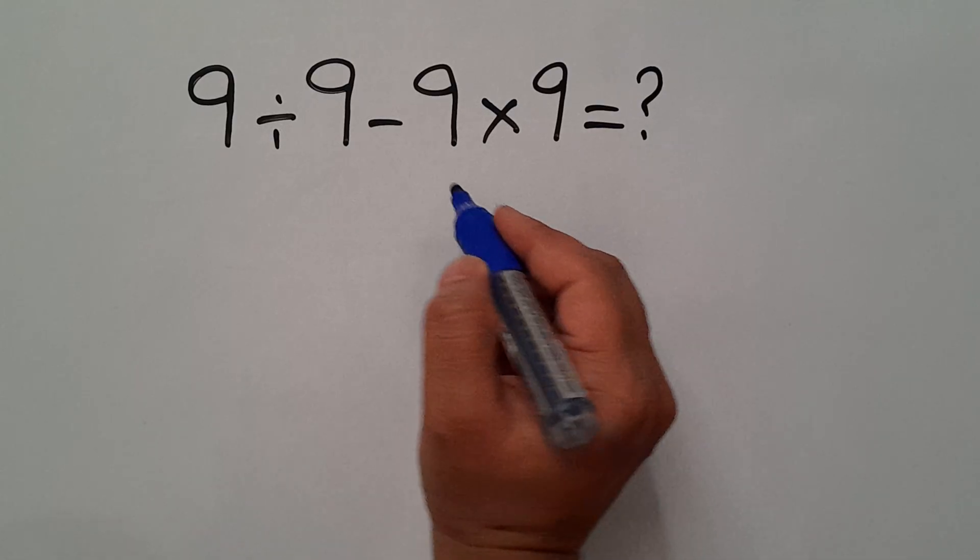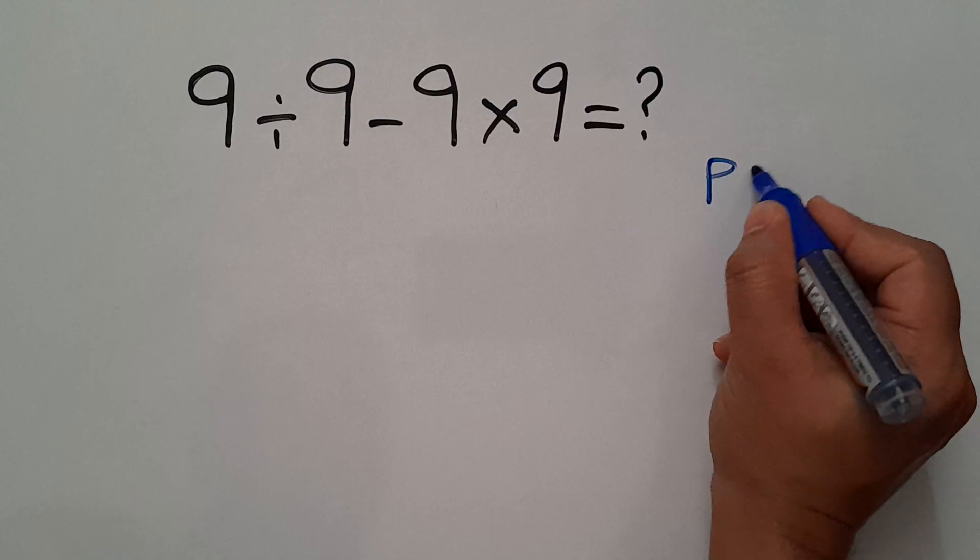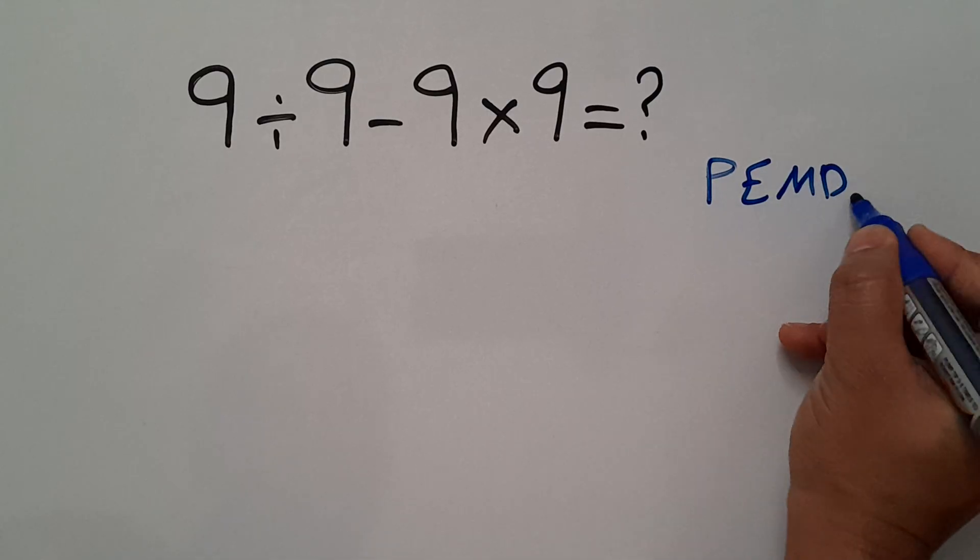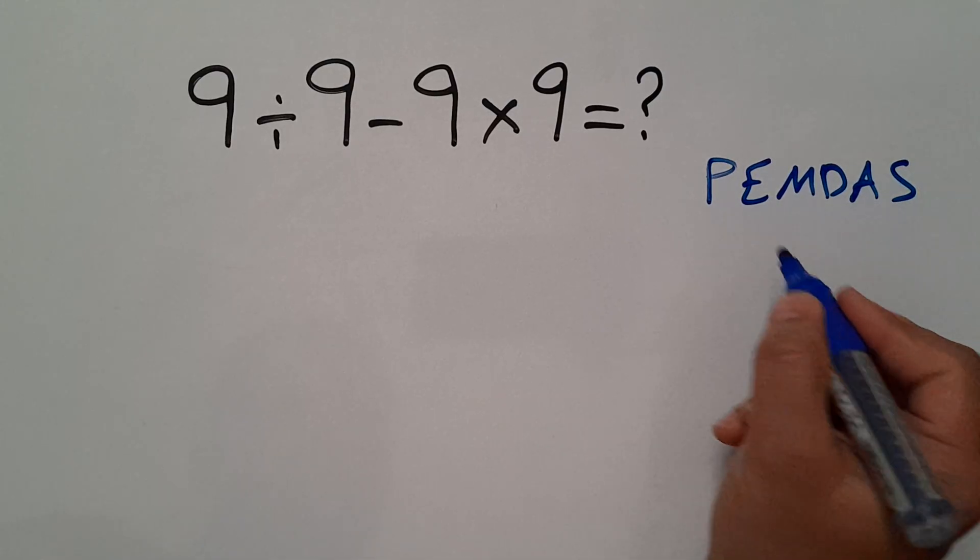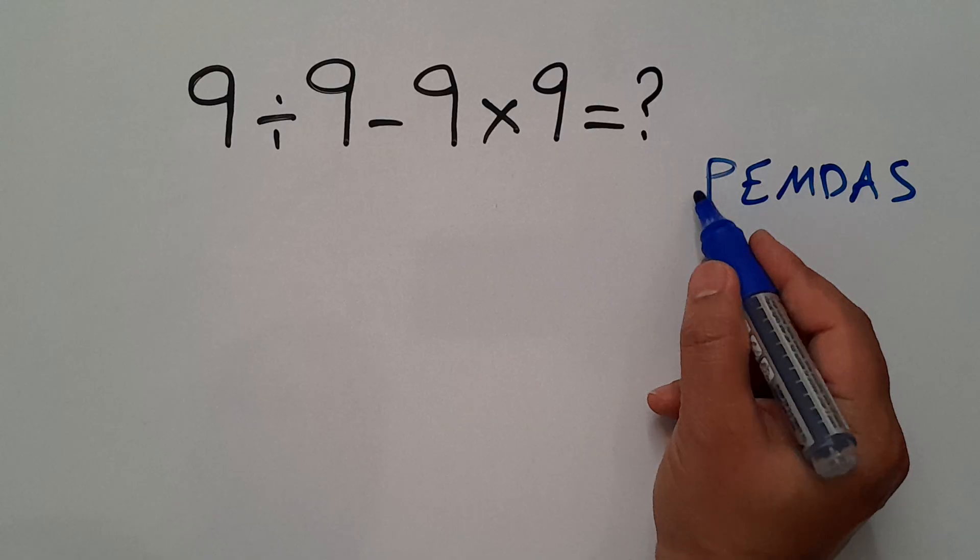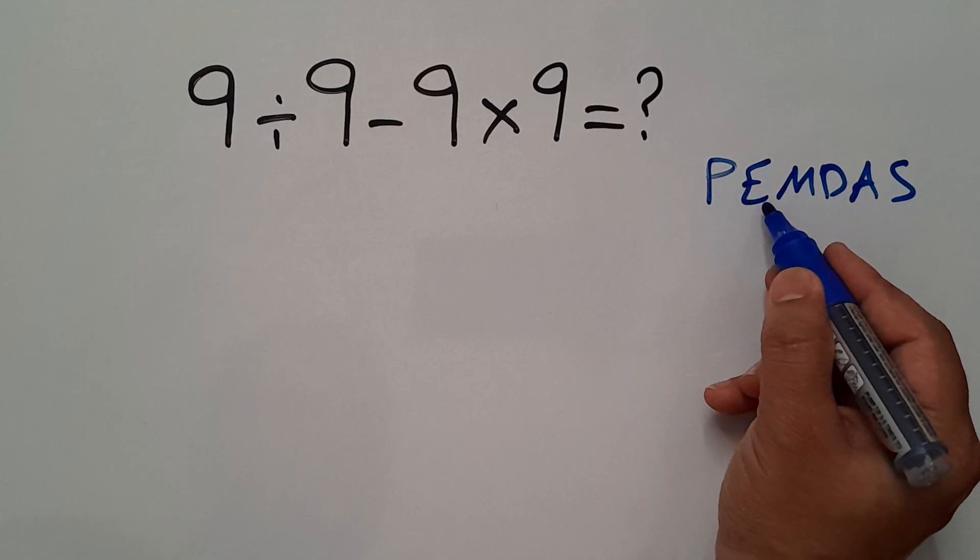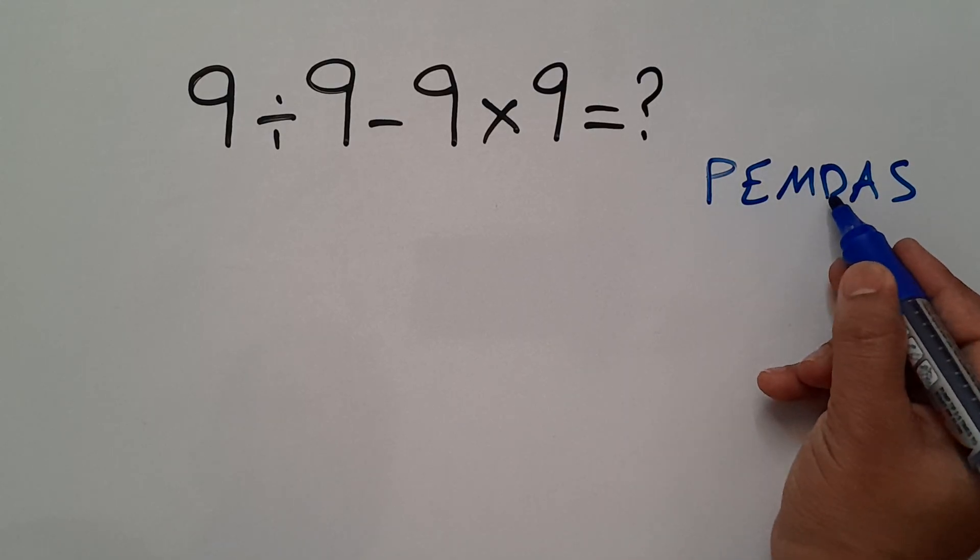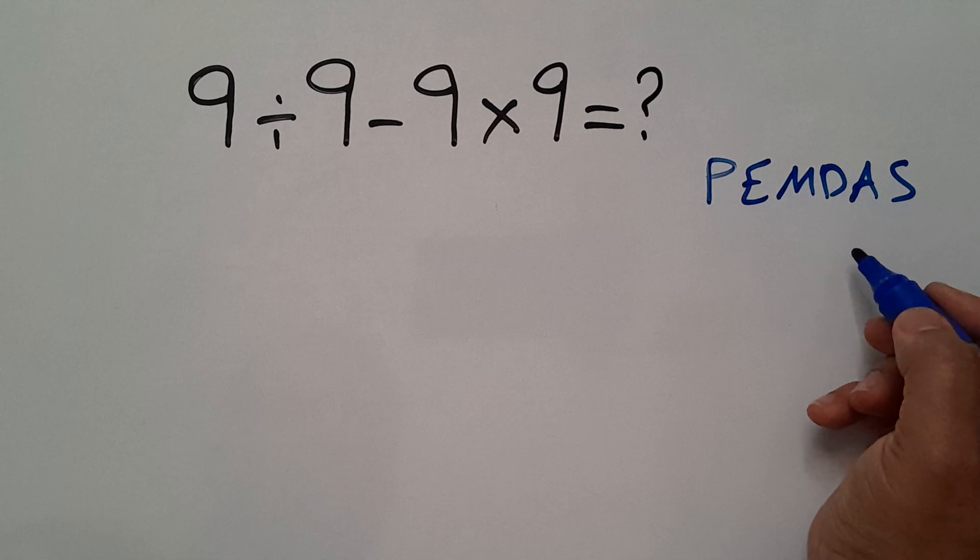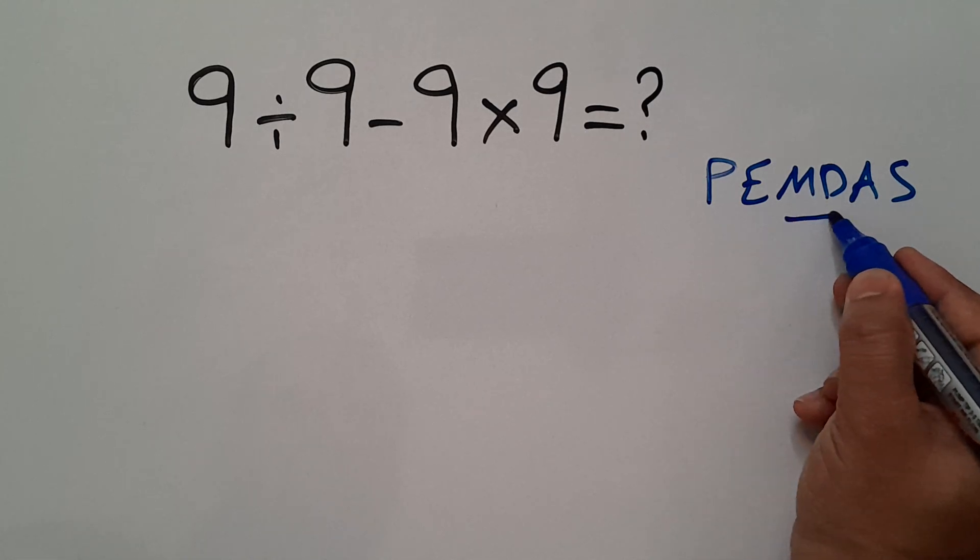According to the order of operations which is PEMDAS, first we have to handle parentheses, then exponents, then multiplication and division, and finally addition and subtraction. Remember that multiplication and division have equal priority and we have to work from left to right, and the same applies to addition and subtraction.